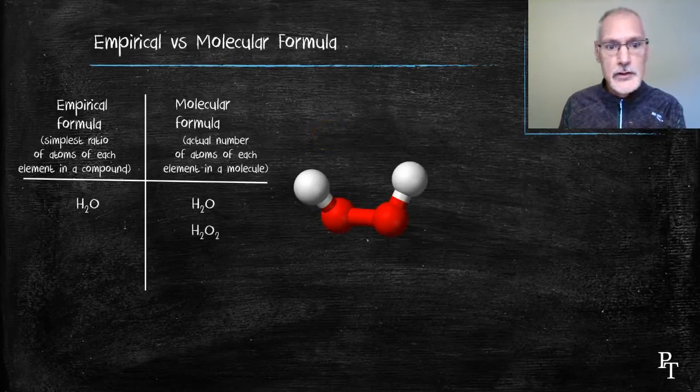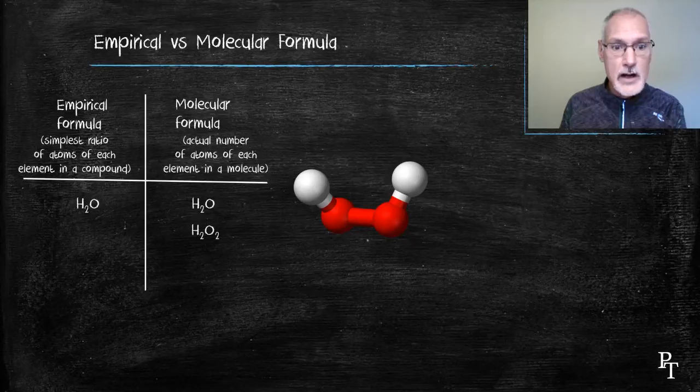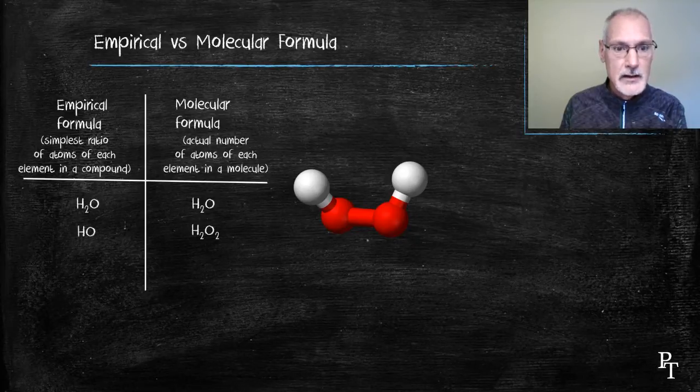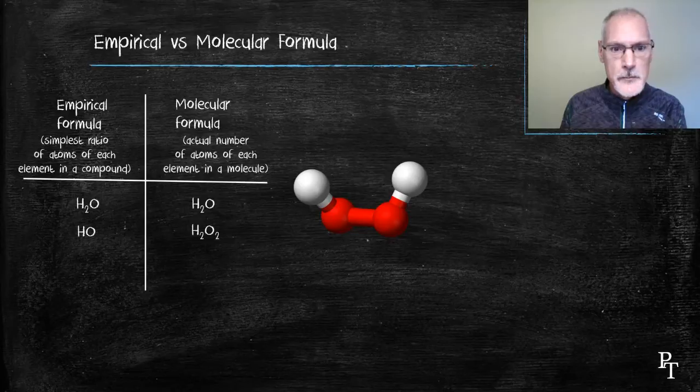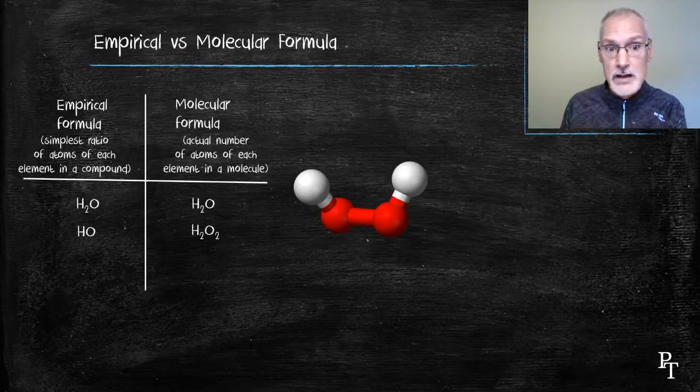I'll try another example, hydrogen peroxide, H2O2. Each molecule of hydrogen peroxide has two oxygens and two hydrogens in it. Reducing that to lowest terms gives me the formula HO. In this case, there actually is a difference between the empirical formula and the actual number of atoms that are present within the molecule.